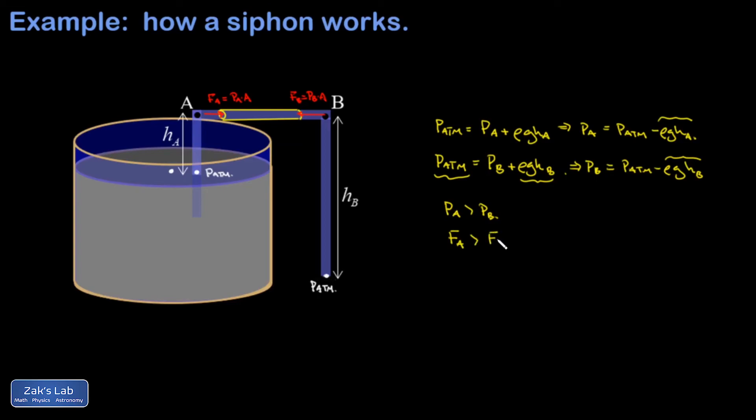This means there's a net force to the right on that little chunk of water, so we can say with certainty that the water begins accelerating this way and we end up with water flowing spontaneously out of this container, provided we still keep the end of the tube below the surface of the water.